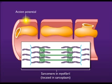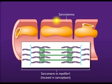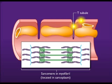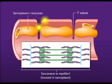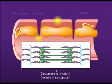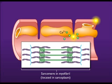An action potential introduced at the neuromuscular junction is propagated along the sarcolemma of the skeletal muscle. At the T-tubule, the action potential is propagated on the T-tubule membrane into the interior of the muscle cell near the ends of the sarcoplasmic reticulum. The depolarization of the T-tubule membrane causes nearby voltage-gated calcium ion channels on the sarcoplasmic reticulum to open.